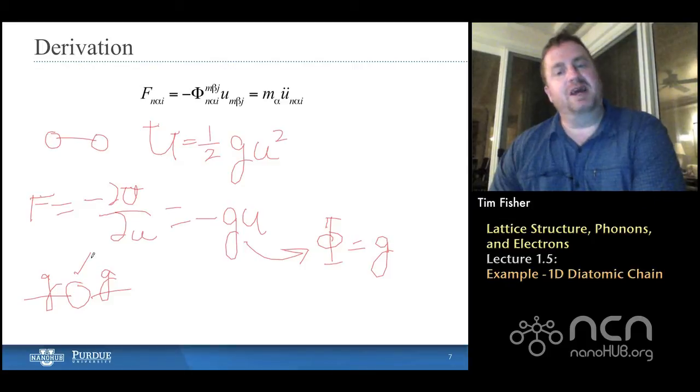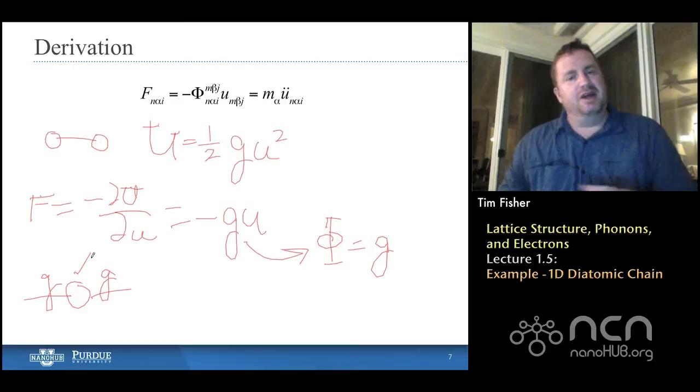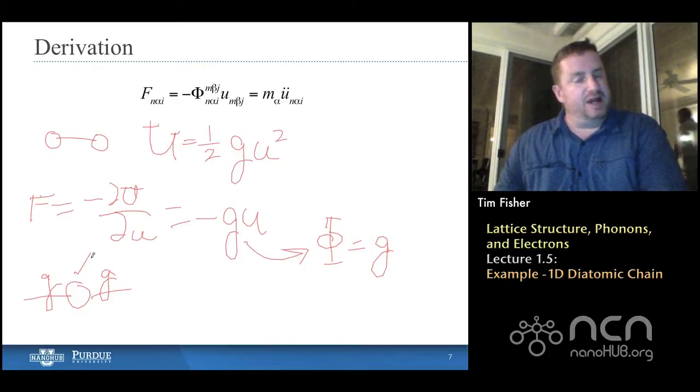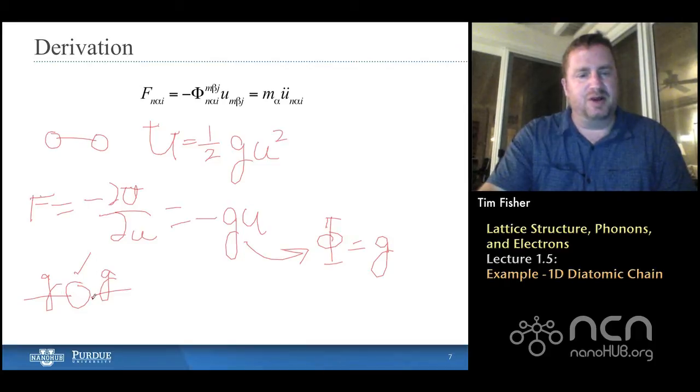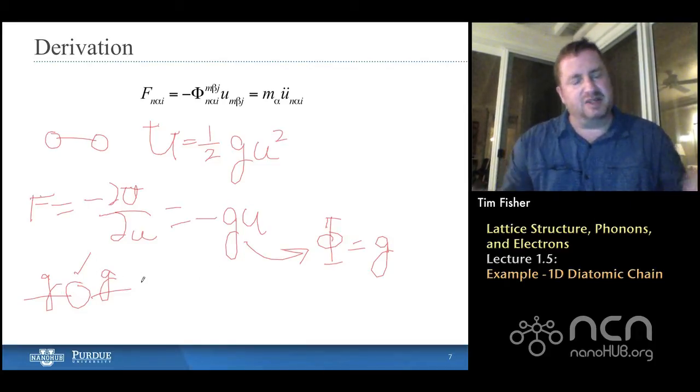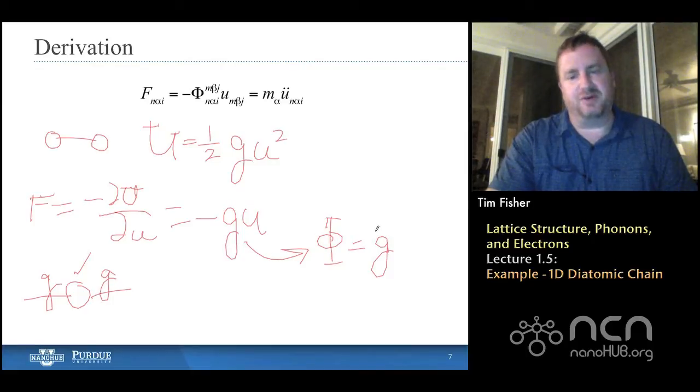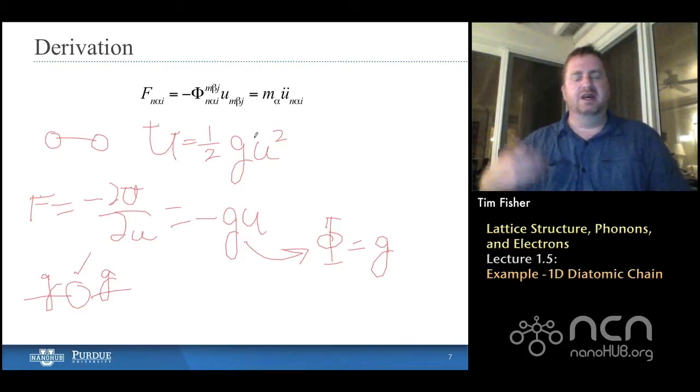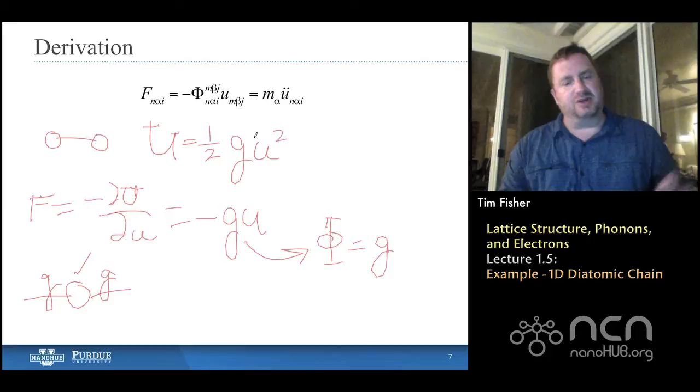And then everything else that comes in, those minus Gs in the off-diagonal terms, what they're doing is really accounting for the displacements of the other atoms, of the neighboring atoms, relative to the displacement of this atom. So, the 2G sort of represents the case where if the side atoms, the nearest neighbor atoms were fixed, they weren't moving at all, then I'd have 2G times the displacement U for this term. Or, really, we'd have one half, two times G times U squared for the potential energy. And then we correct for that in the off-diagonal terms based on the location of the neighboring atoms.